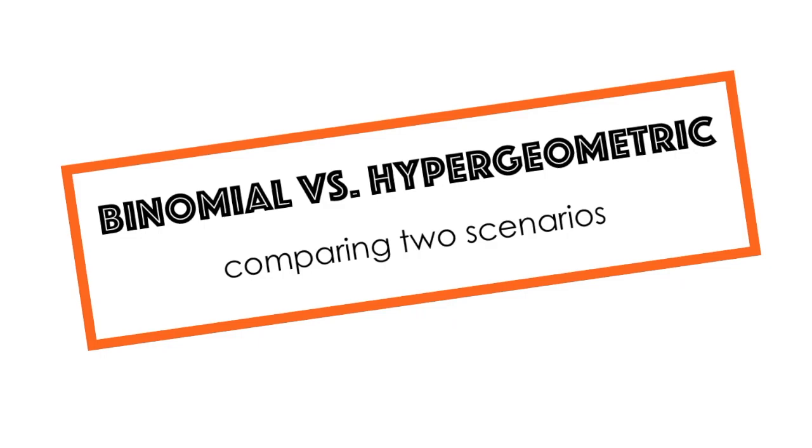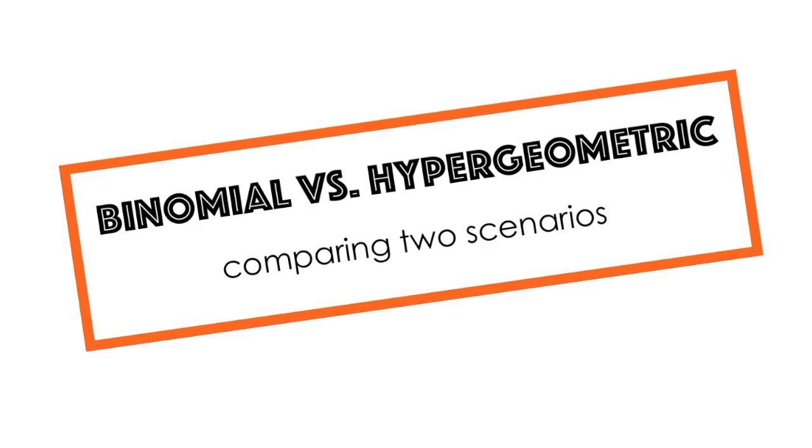The easiest way to illustrate the similarities and differences between hypergeometric and binomial distributions is to compare two very similar yet different scenarios. What I'm going to do in this quick video is compare two very similar but different scenarios involving a deck of cards.